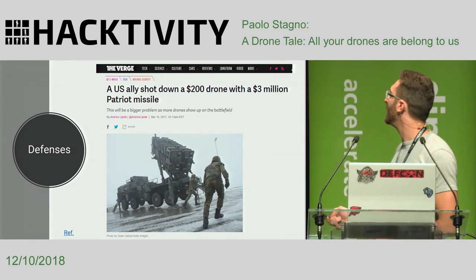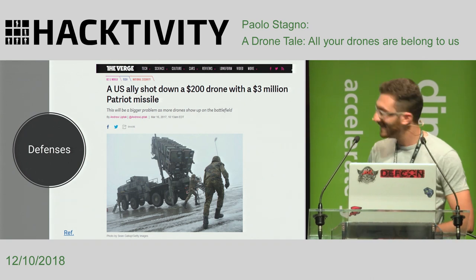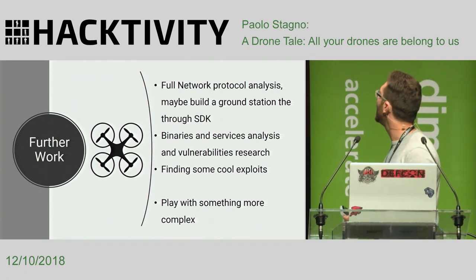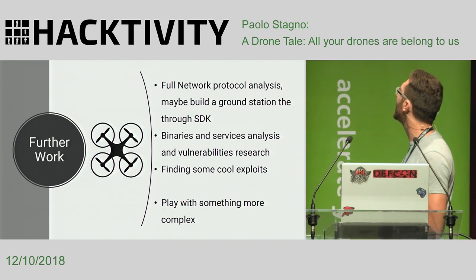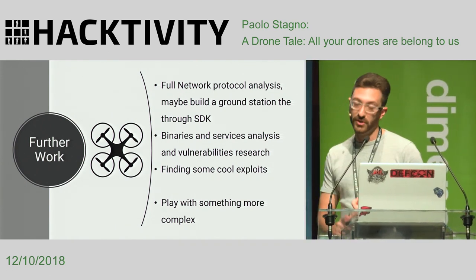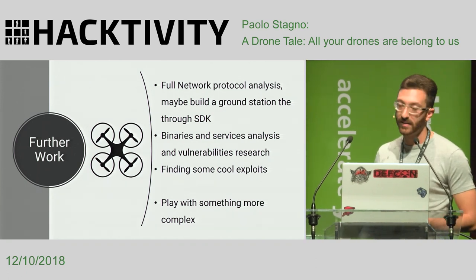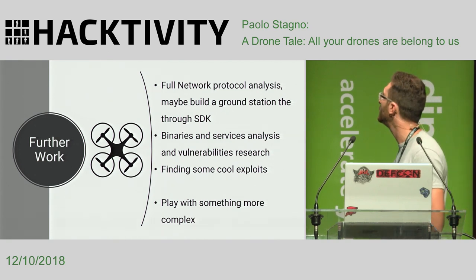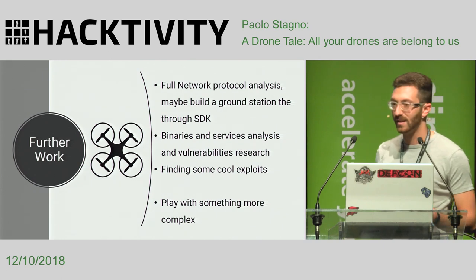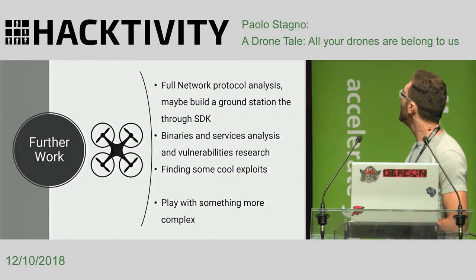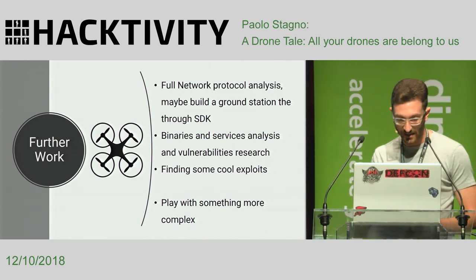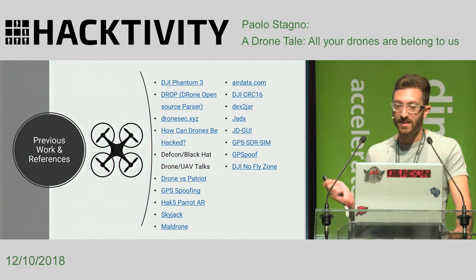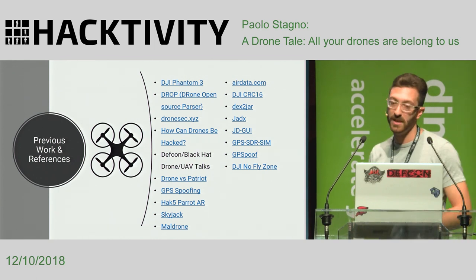This is what happened in reality — they shot down a drone with a $3 million missile. For further work, I could try to reverse engineer and decompile all the custom binaries present on this modified version of OpenWrt in order to find exploits that could be used inside the drone's network. Or maybe I can play with something more complex next time, such as the fourth model of the DJI or the upcoming new ones. Some references and useful links will be available in the slides.